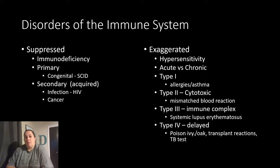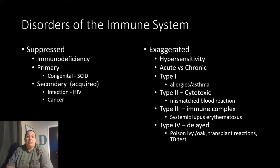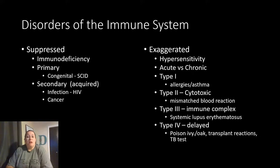There are two types of immunodeficiencies. Primary means the individual was born with the problem — they were missing some or all of their immune system components, and their immune system does not develop normally, making them very susceptible to infections. An example of this is SCID. On the other hand, a secondary or acquired immunodeficiency is one you develop from something else that weakens your immune system — this could be due to cancer, cancer treatments with chemotherapy, or immunosuppressant drugs taken after a transplant.